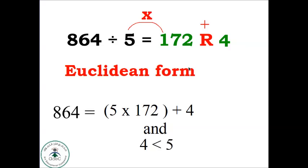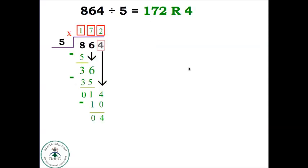To remember the Euclidean form in another way, you can draw a curve or an arrow. Start with the dividend, write 864 equals, then you start with 5 times 172 plus 4, like an arrow or curve.